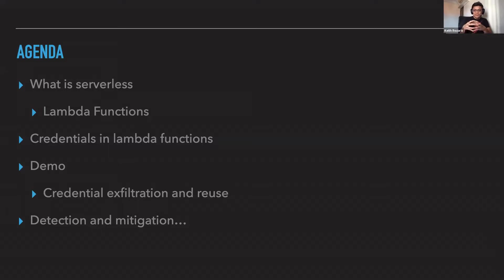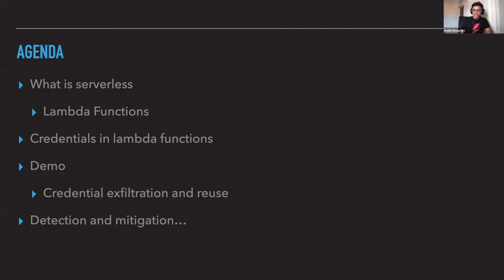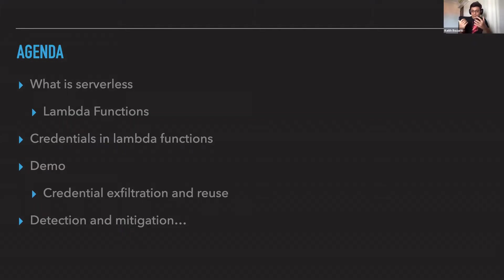After we talk about Lambda functions, we're going to talk very specifically about the credentials of a Lambda function — this is the most interesting thing. Compromising a VM or a container is one thing, but Lambda functions are a very low privileged environment with very low amounts of compute and resources, and they're usually meant to do only one thing. The real gem in a Lambda function is not getting RCE on the container — it's exfiltrating the credentials. The credentials are the most important thing, and we'll show in the demo how we exfiltrate them and reuse them elsewhere. Finally, we'll wrap up with detection and mitigation.